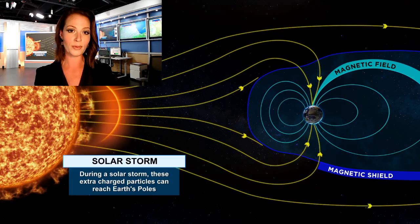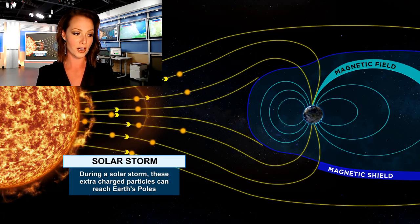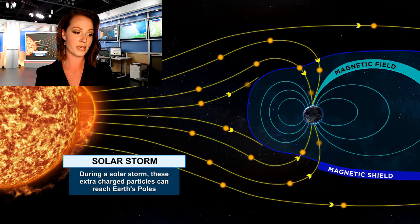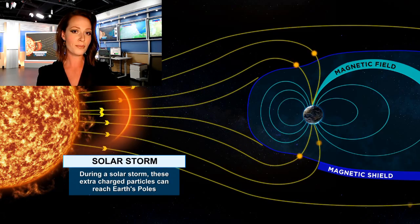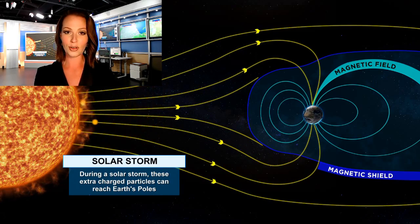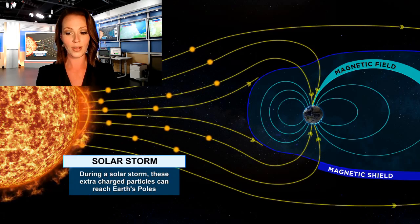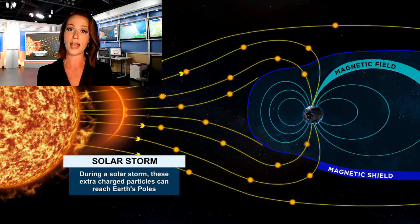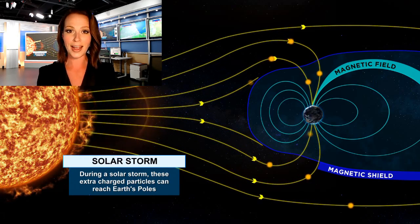There was a solar storm that was observed by the Space Weather Prediction Center. When that happens, you have extra charged particles that are being pushed out into space from the Sun, and then they make their way to the Earth's poles. When that happens and it enters into Earth's atmosphere, it begins to interact with our atmosphere.